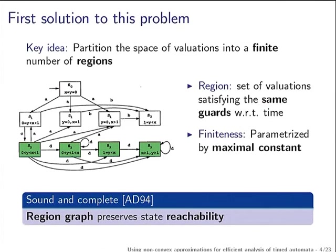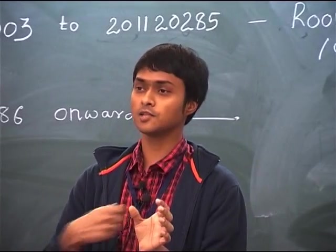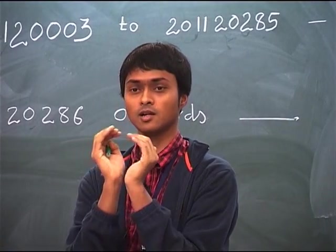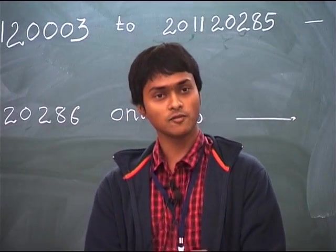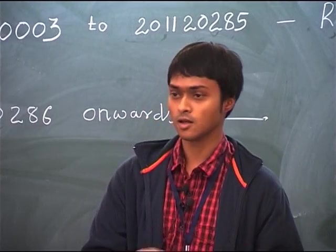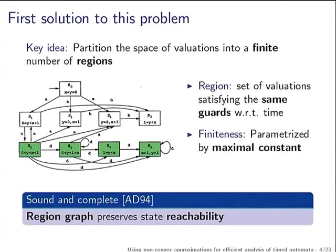The property of this region construction is that for two valuations within the same region, you can play the same set of paths — so there is no point distinguishing them; you might as well consider them as a single bundle. Once you have defined these regions, you take a cross product with the states of the automaton to build what is called the region graph. The region graph is sound and complete with respect to reachability.